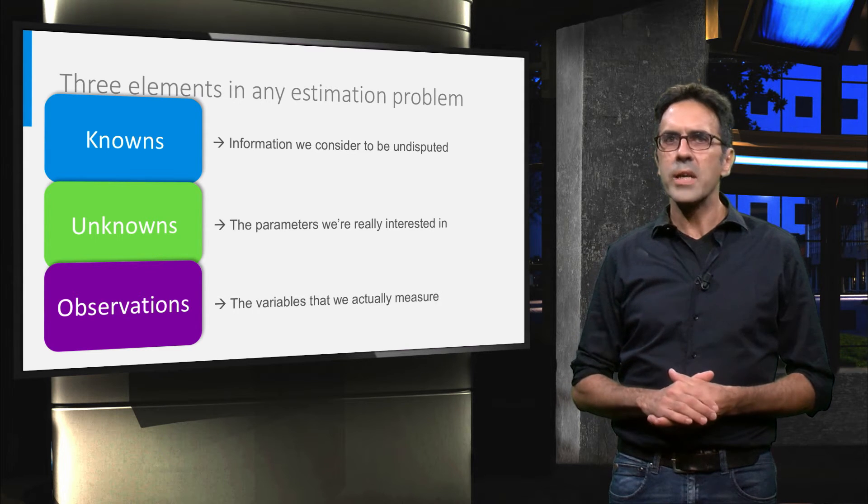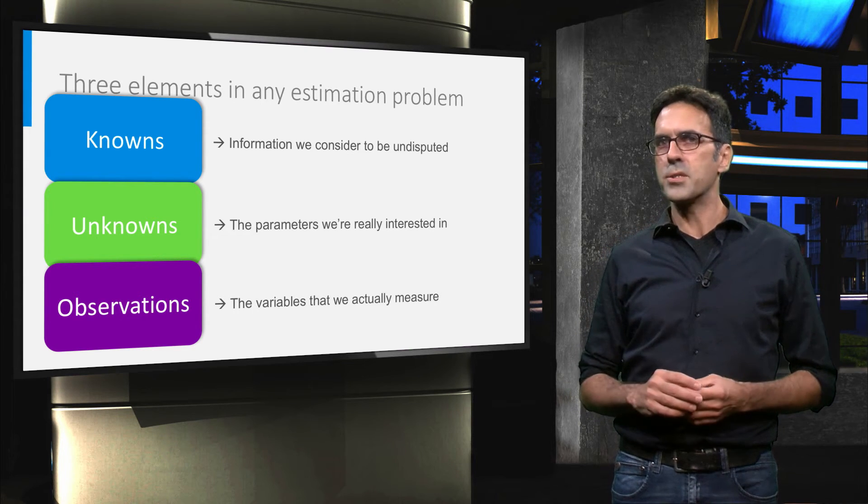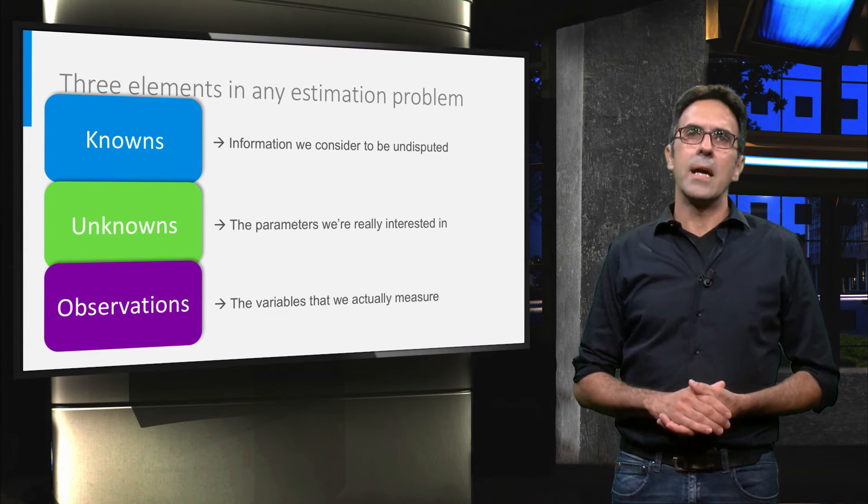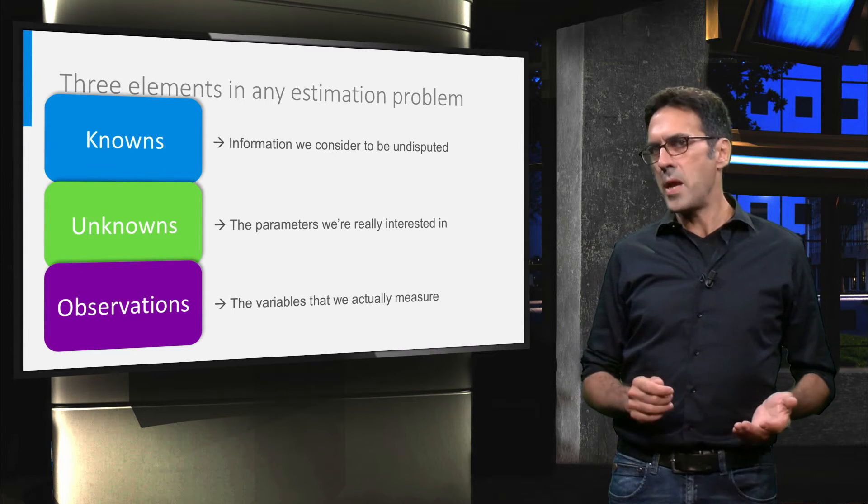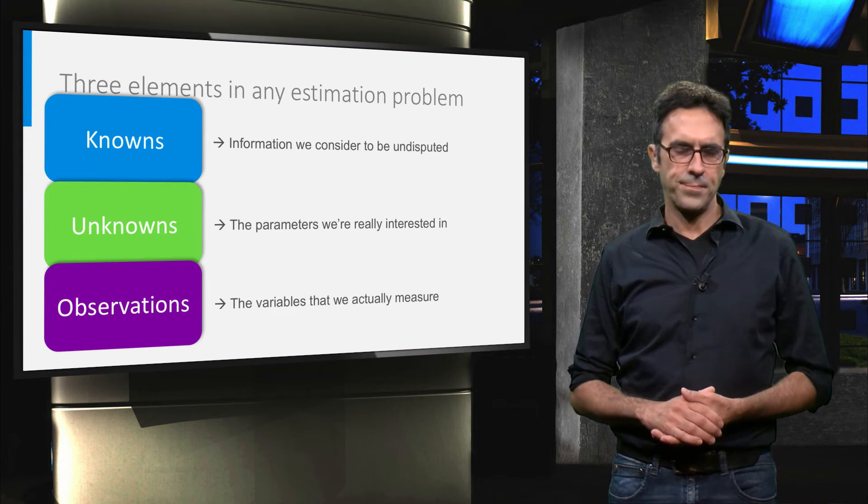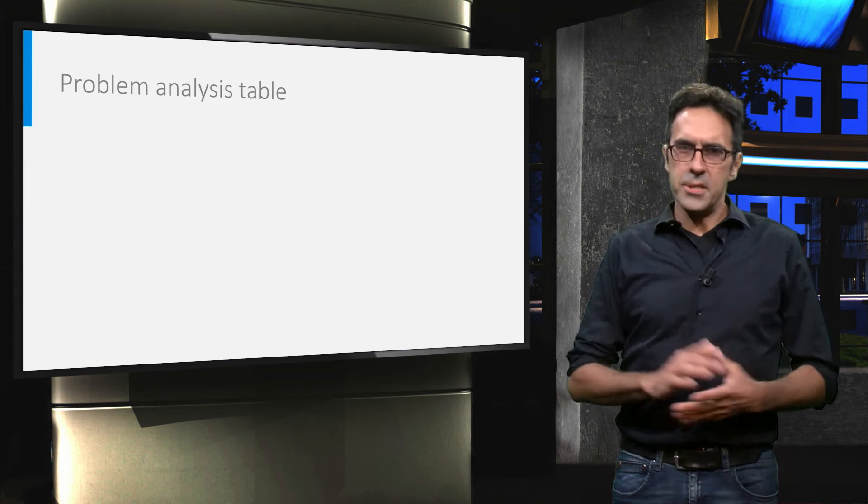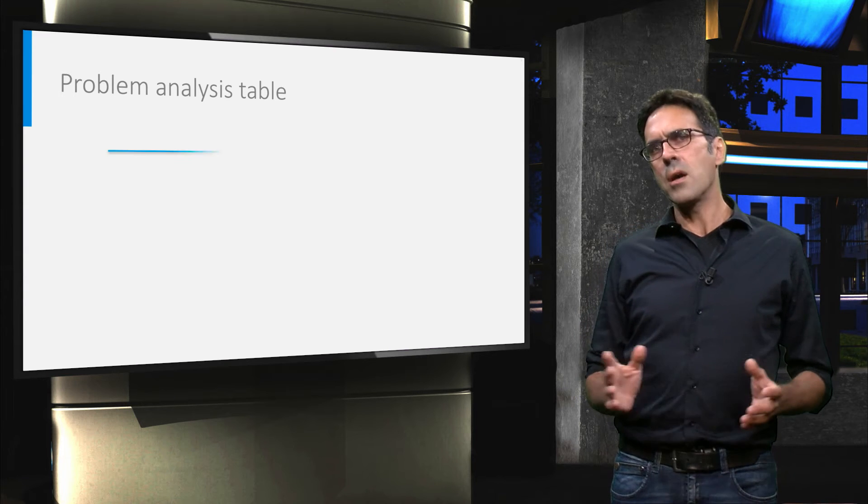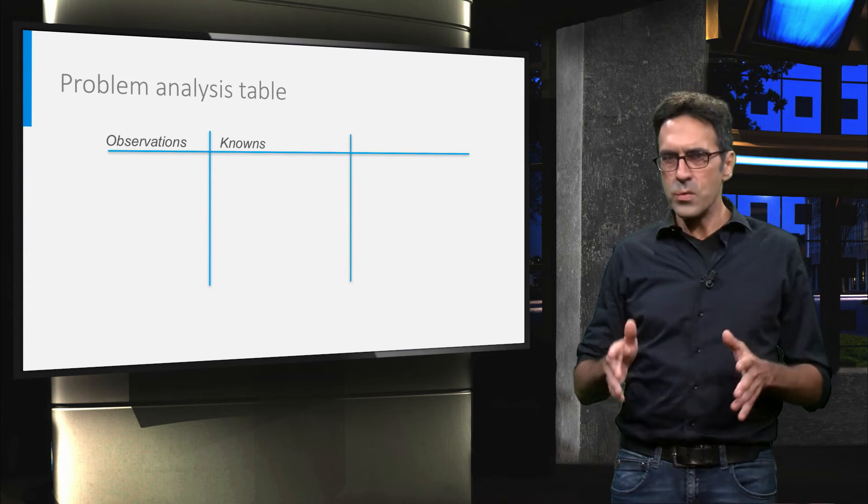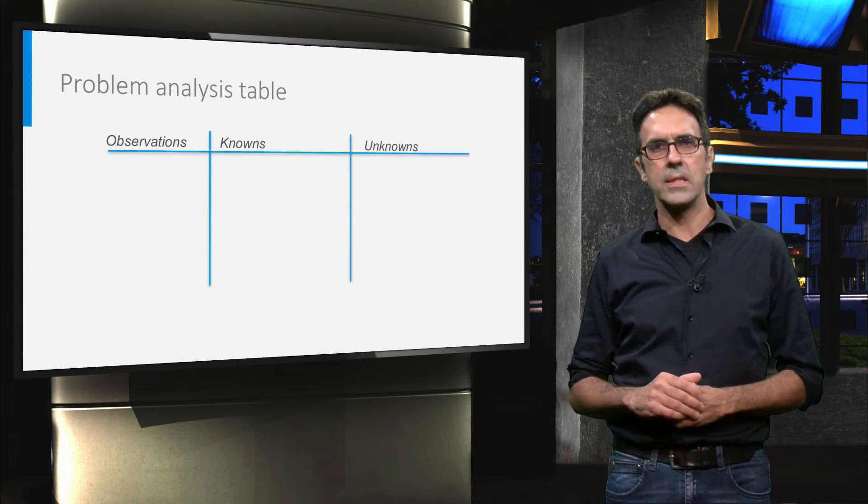Now in order to get familiar with this approach, let's look at some examples and practice. I propose that you take a pen and some scratch paper and make some notes. You can make a problem analysis table and draw three columns for the observations, the knowns, and the unknowns.